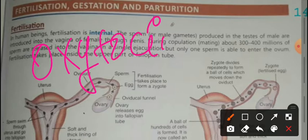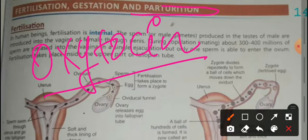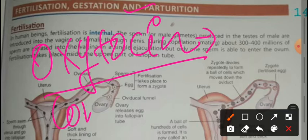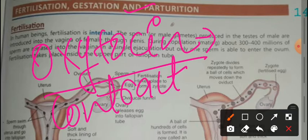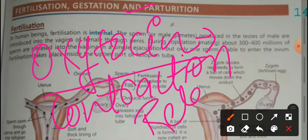When the child is developed, it is time for delivery. The oxytocin hormone is released, and this process is called parturition. The contractions begin, and at the end of contractions, the baby is born. The body then releases the relaxin hormone so the uterus can return to its normal shape and size.